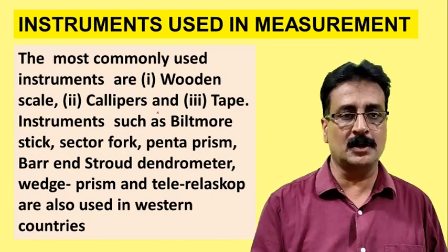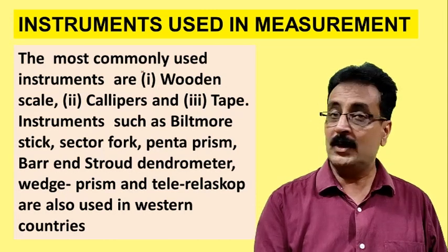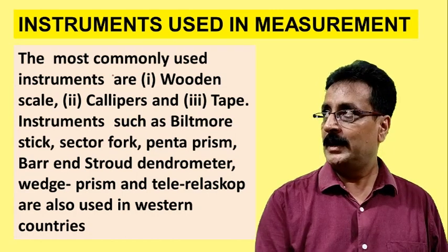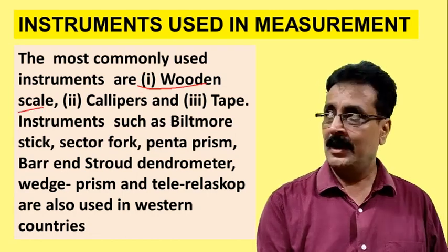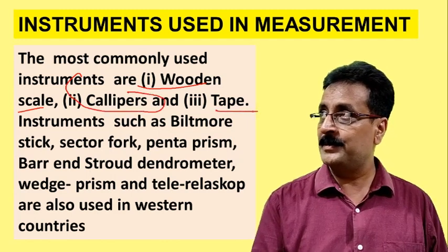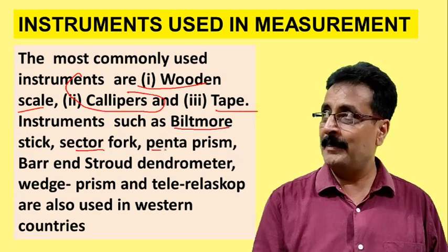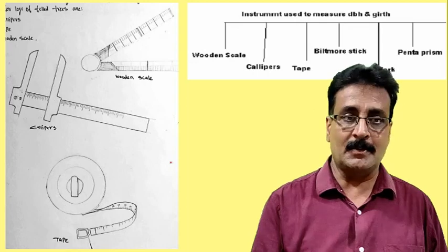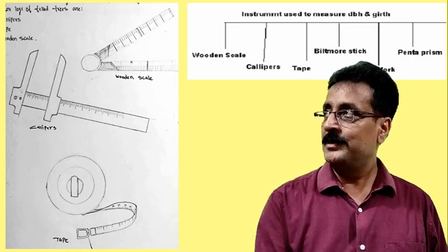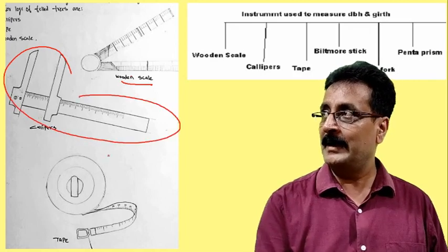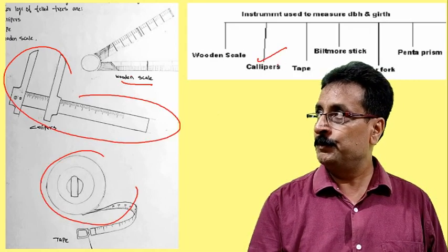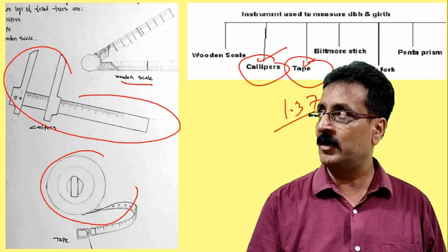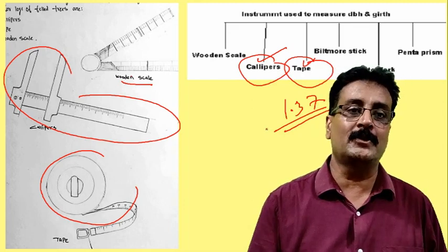So those are the DBH rules for determining where to take the diameter or girth measurement. Now, what instruments are used to measure diameter at breast height or girth at breast height? Earlier we used wooden scales. There are also calipers, tapes, Biltmore sticks, pentaprisms, and other instruments, which I will cover in the coming lectures.